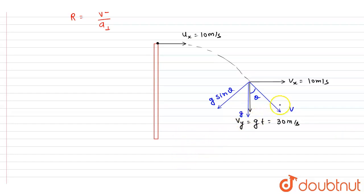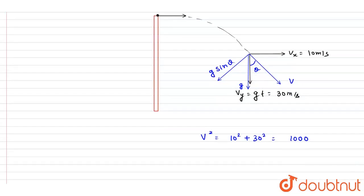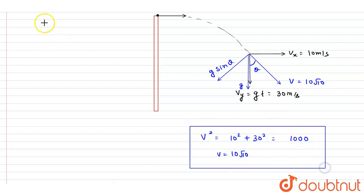To find g·sinθ, we first calculate the resultant velocity v. v² = 10² + 30² = 100 + 900 = 1000, so the velocity v = 10√10 meters per second. Now, sinθ can be found from the geometry: the perpendicular component is 10 and the hypotenuse is 10√10.